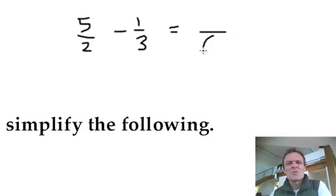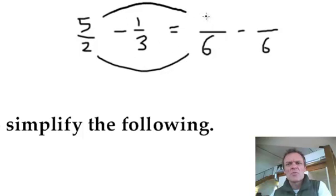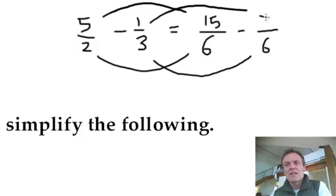Remember your fractions. Common denominators, 2 and 3, is 6. Multiply by 3 to get there, so do the same to the top, that's 15. Multiply by 2 to get there, do the same to the top, that's 2.